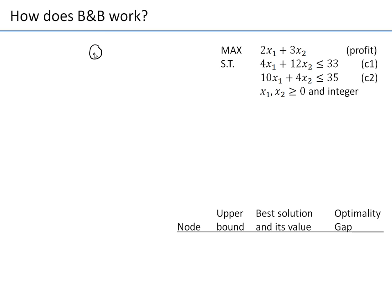We know how to solve this using the simplex method. We get the optimal solution x1=2.77, x2=1.83, with a value of 11.02. In node 1, the value of the linear programming relaxation is an upper bound — 11.02. So the profit is not going to be higher than this. That's the meaning of upper bound.